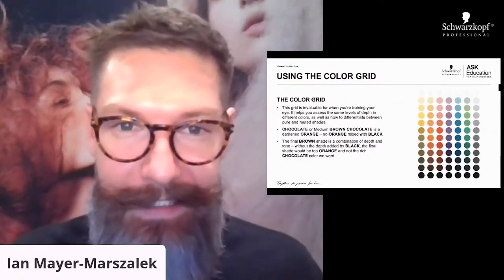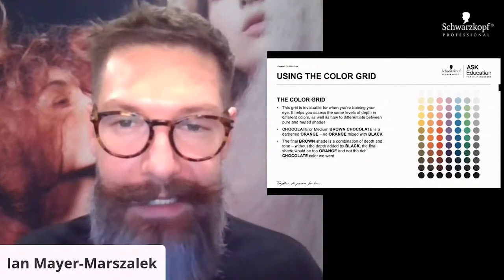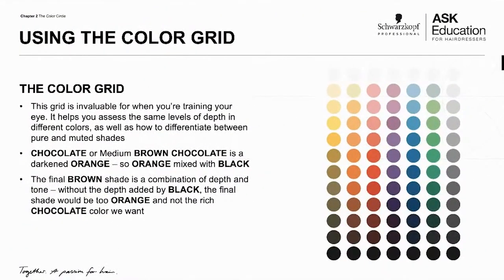The color grid is essentially a scale of lightness or darkness. It's really great to train your eyes — it helps you assess how light or dark something is when it's next to something else. What's the difference between pure tone shades versus shades that are muted by either white, gray, or black?